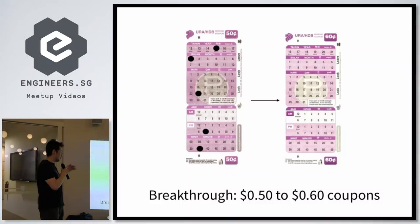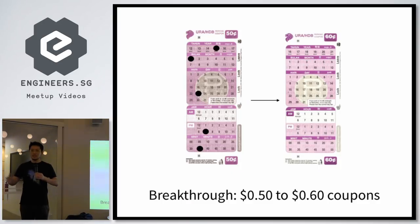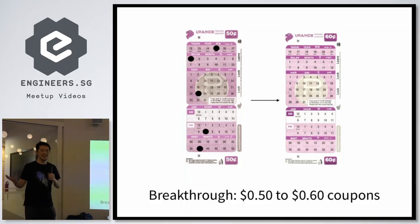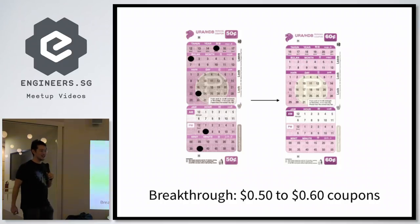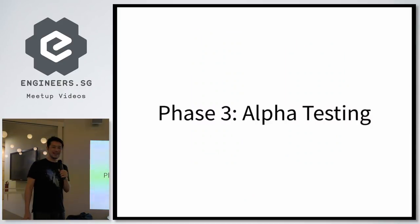Despite all this, our real breakthrough happened when the coupon prices went from 50 cents to 60 cents. Predictably, when you use physical media, a bunch of things happened: everyone was rushing to return the now-useless 50 cent coupons and rushing to buy 60 cent coupons, and they ran out of stock. A lot of people got really mad. In the midst of all these problems, we got a call from the agencies: 'You know that thing you've been talking to us about for a few months? How quickly can you do it?' We said, 'Give us two months.' And they said okay. And that's how we got to phase three: alpha testing.